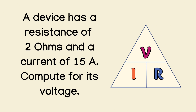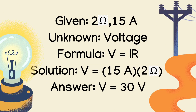Next problem: a device has a resistance of 2 ohms and a current of 15 amperes. Compute for its voltage. The givens are 2 ohms and 15 amperes; unknown is voltage. The formula is V = I × R. So V = 15 amperes × 2 ohms. The answer is 30 volts.